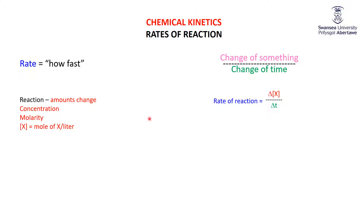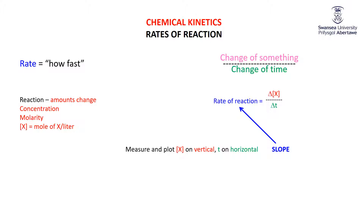When we look at that, as a reaction happens the concentration of X changes. If we were to plot out the concentration of X on the vertical axis and time T on the horizontal, then the slope of that line would be the rate of reaction.